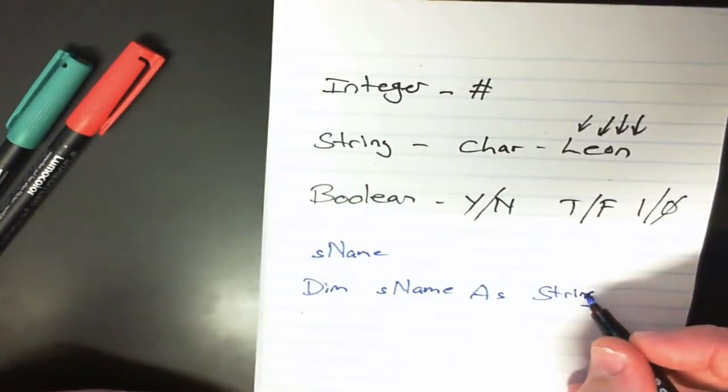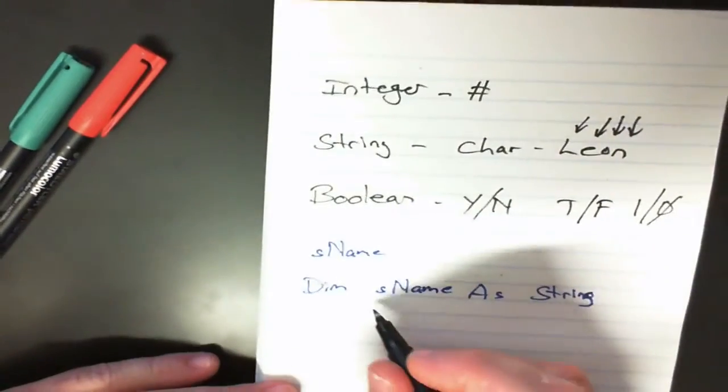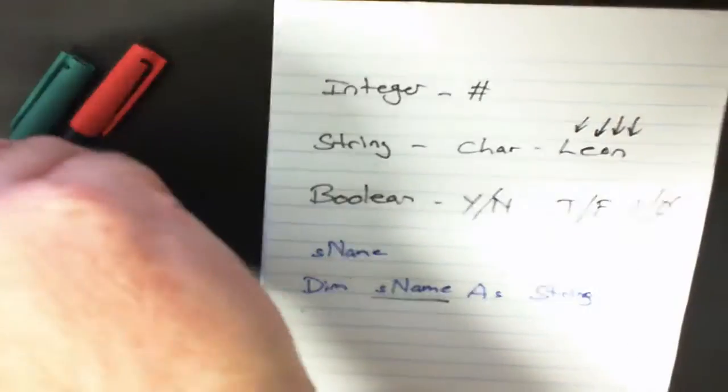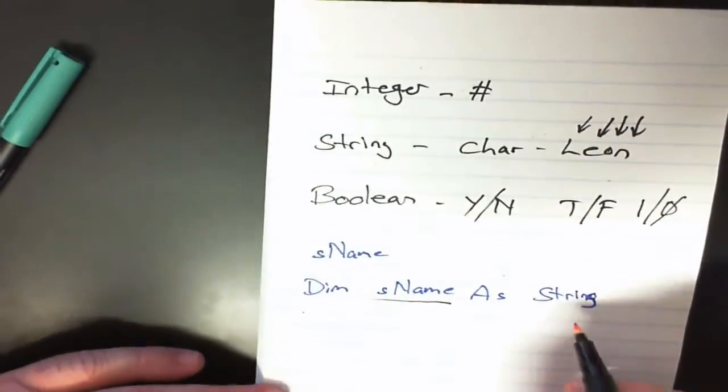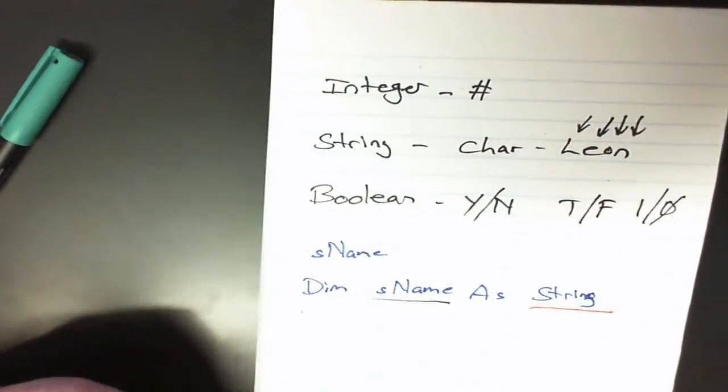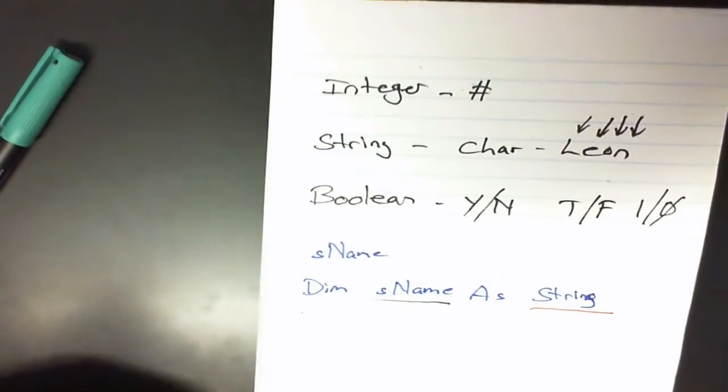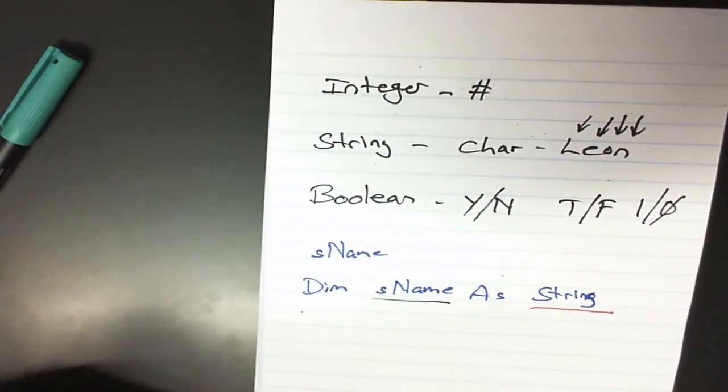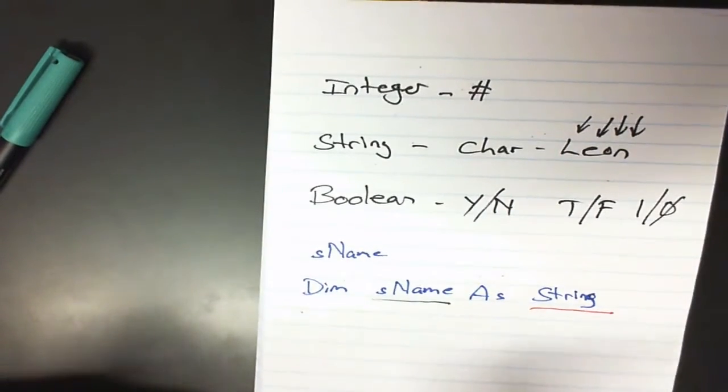So what we have is the variable name, we also have the variable type. So this is very important to the computer so they know what type of information has been put into sName.